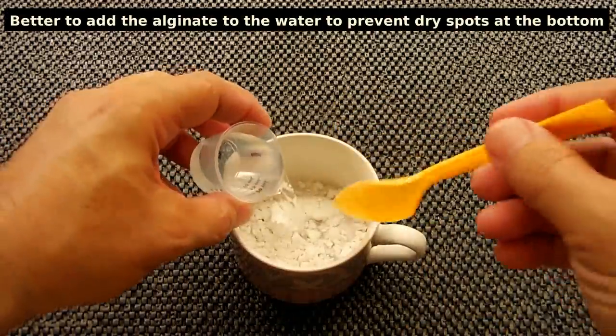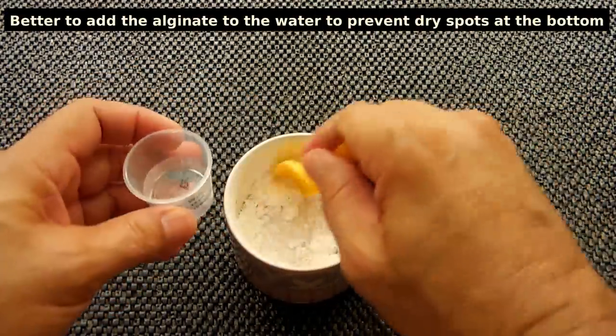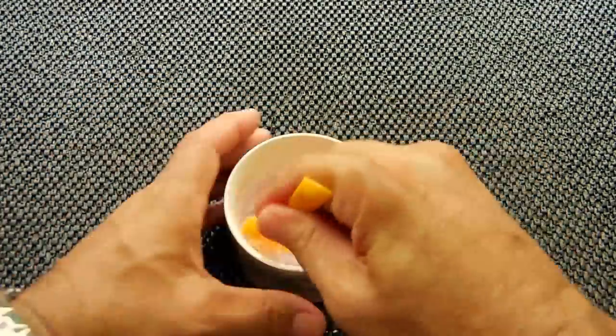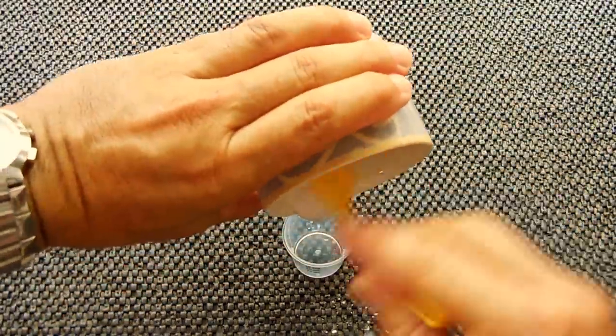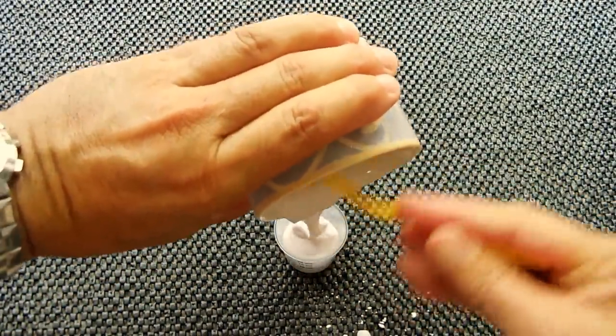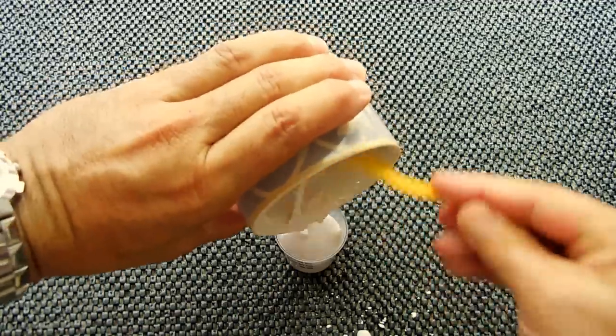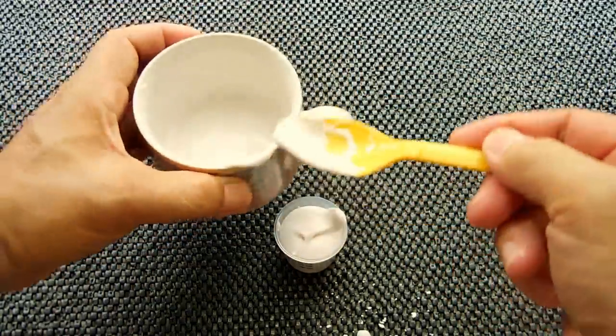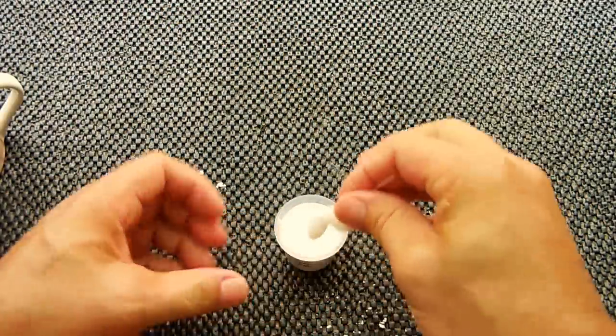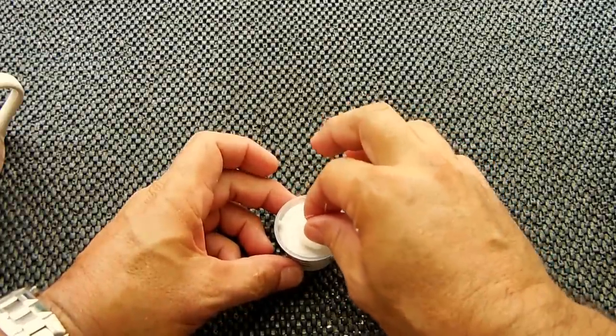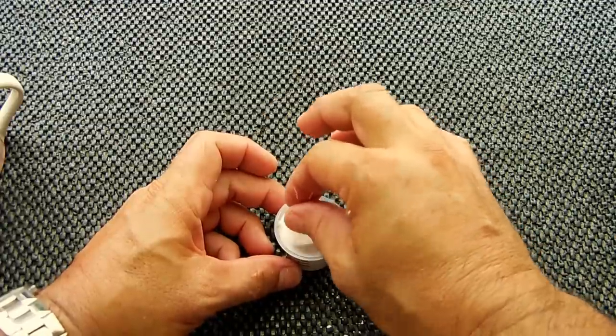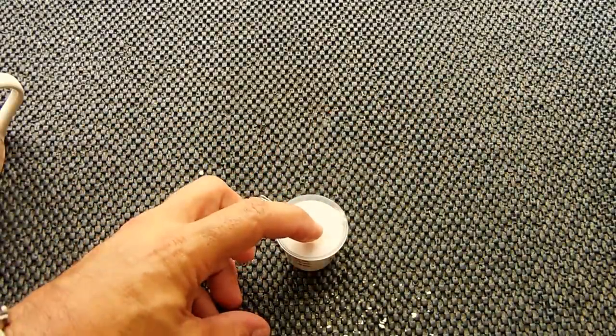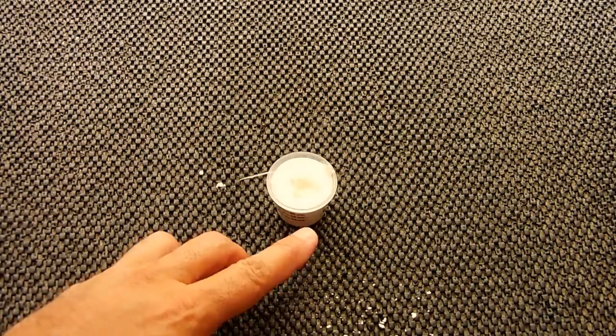I'm going to mix this up, pour it into the small container, and then take this one right here and push it all the way down. Let me mix it up good and get this into the cup. There should be no air bubbles introduced. I'm going to push that all the way down and wiggle it on the way in.